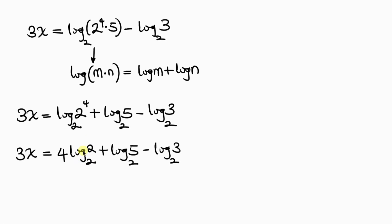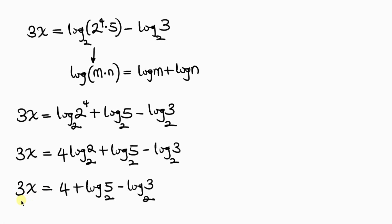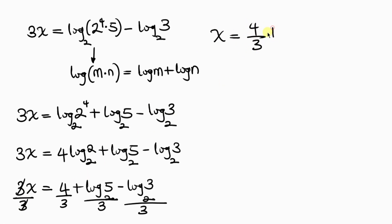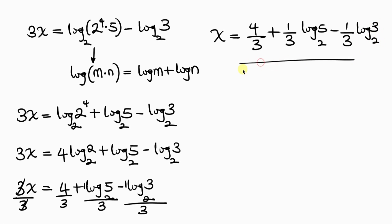Since we're looking for x, all we have to do is divide through by 3. So 3 cancels out 3, leaving x to be equal to 4 over 3, plus — there is an invisible 1 here — 1 over 3 log 5 base 2, and then minus — the same thing here, invisible 1 — 1 over 3 log 3 base 2. And this is the final answer for x.